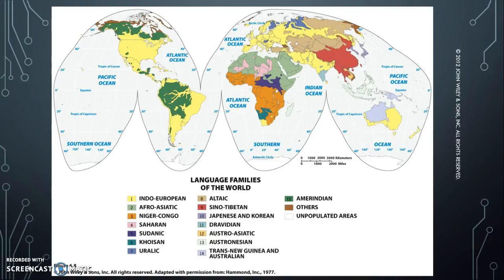To give you a general idea of what we're talking about when we discuss languages and where they come from and how they've spread: we've got our Indo-European languages in yellow, Afro-Asiatic language family in a gray-green, the Niger-Congo languages in orange, and we've got Saharan and Sudanic, Khoisan — all also in Africa.